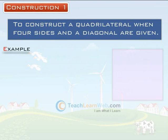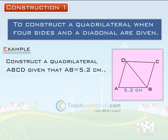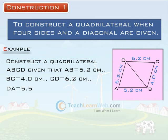Example: Construct a quadrilateral ABCD, given that AB equals 5.2 cm, BC equals 4.0 cm, CD equals 6.2 cm, DA equals 5.5 cm, and BD equals 7.1 cm.